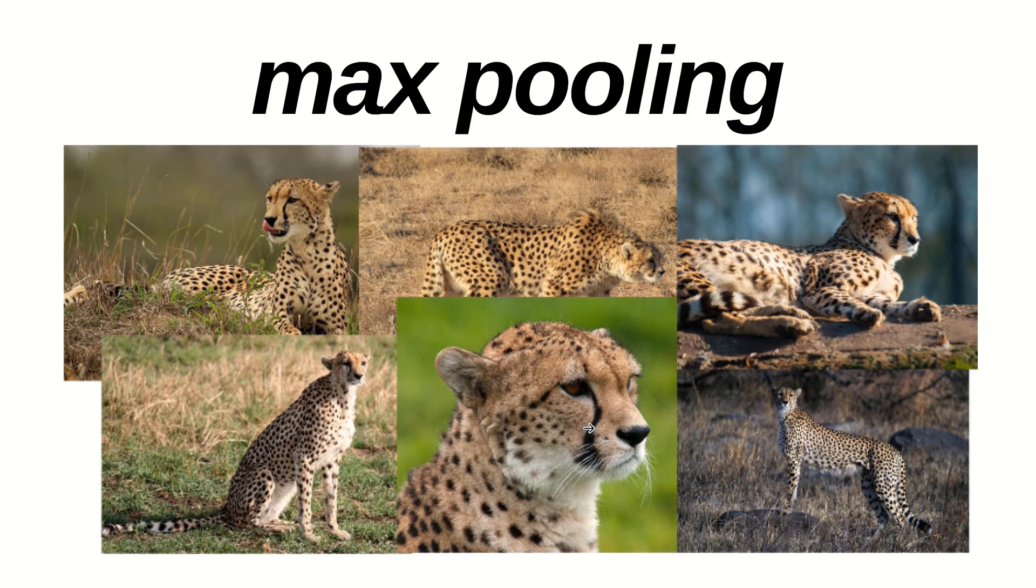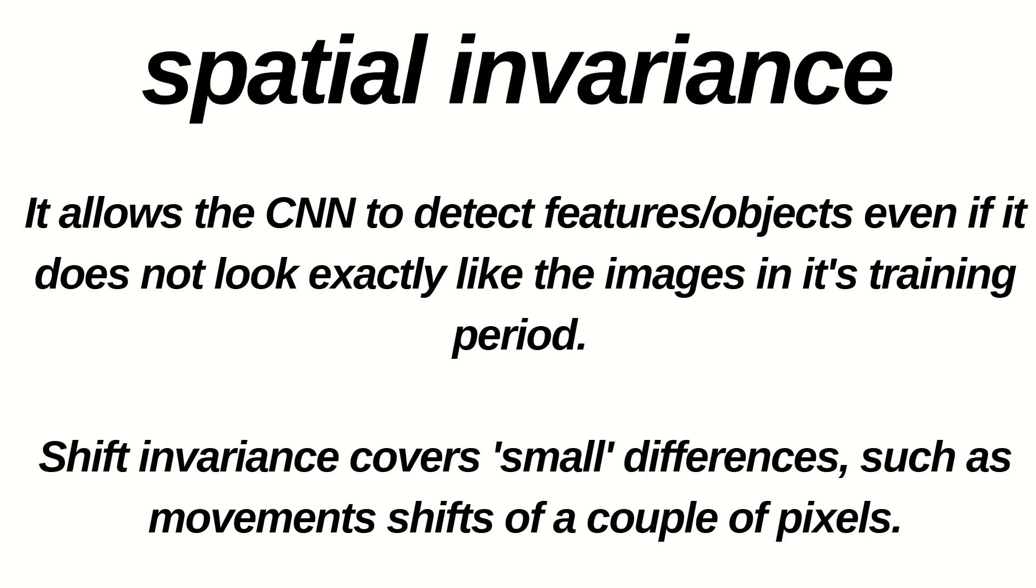So we have to make sure our neural network has a property called spatial invariance, meaning that it doesn't care where the features are allocated, not so much in which part of the image, because we have kind of taken into consideration with our convolutional layer, but doesn't have to care if the features are a bit tilted, if features are a bit different in texture, if features are a bit closer, if the features are a bit further apart relative to each other. If the feature itself is a bit distorted, a neural network has to have some level of flexibility to be able to still find that feature. That is what pooling is all about. In this slide, I've talked about an important feature called spatial invariance. It allows the CNN to detect the features, objects, even if it doesn't look exactly like the images in its training period. The shift invariance or the spatial invariance covers small differences such as movement shifts of a couple of pixels. This is a property we have to follow in the pooling stuff.